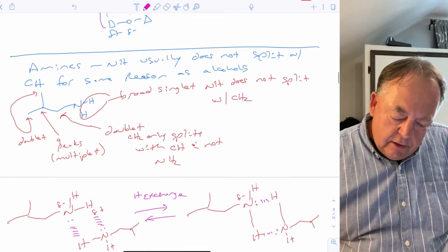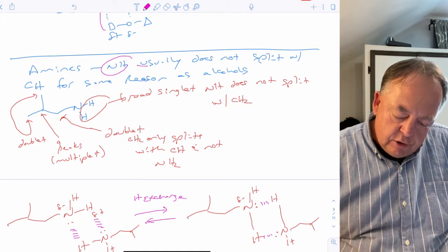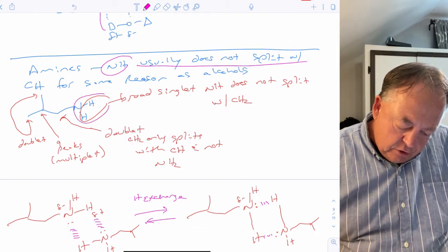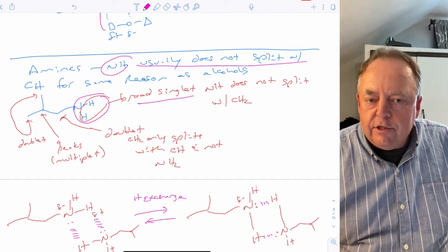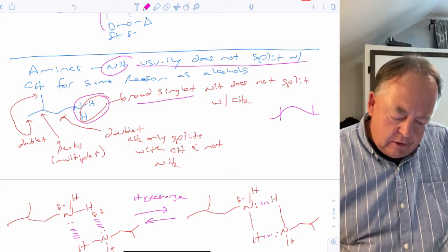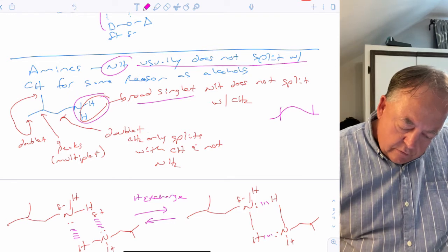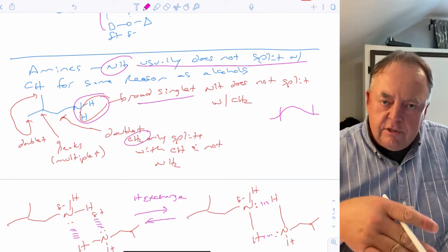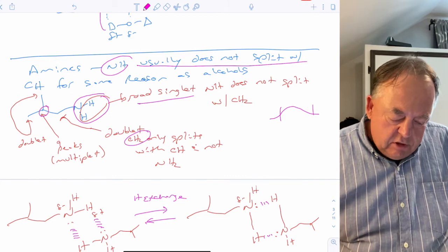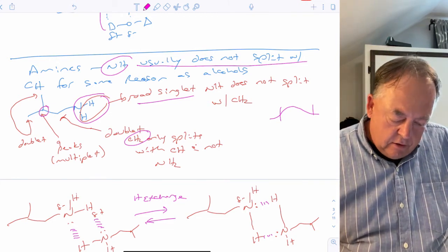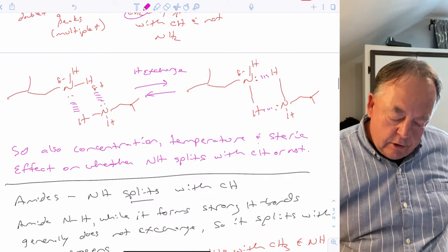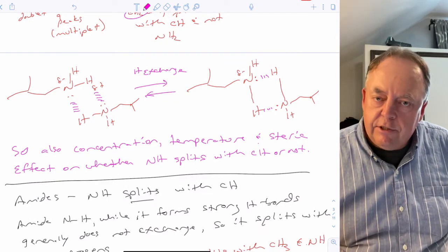Amines behave similarly. NH hydrogens on amines usually do not split with hydrogens on carbon, for the same reason as alcohols. The NH2 of an amine typically shows up as a broad signal integrating to two hydrogens, though broad signals can be difficult to integrate accurately. The adjacent CH2 would only see one neighbor and appear as a doublet rather than a quartet.